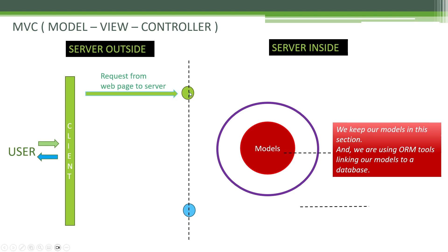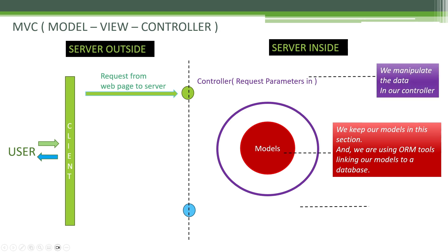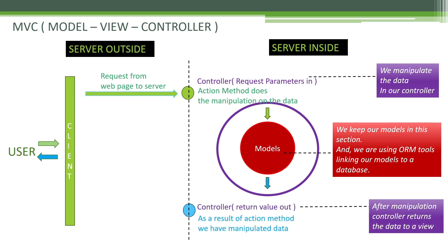This request is taken by the controller, and if there is a parameter, the controller takes the parameter as well. The controller is the commander — it defines which action method is needed, then sends the request to the related action method. The action method does the manipulation on the data, then goes to the model, takes the data, and brings it back to the controller.